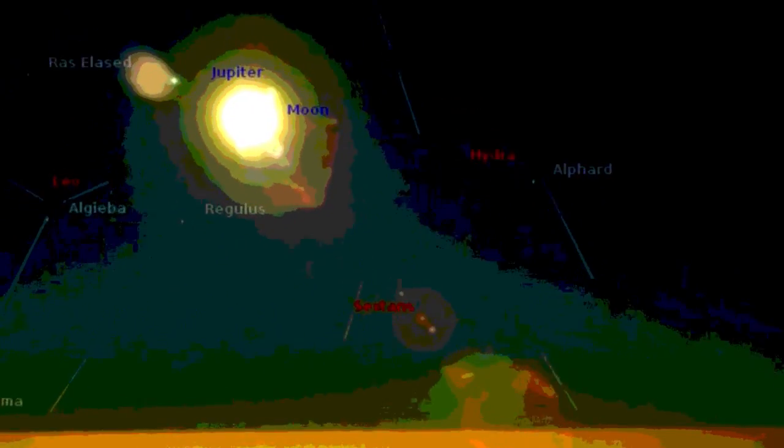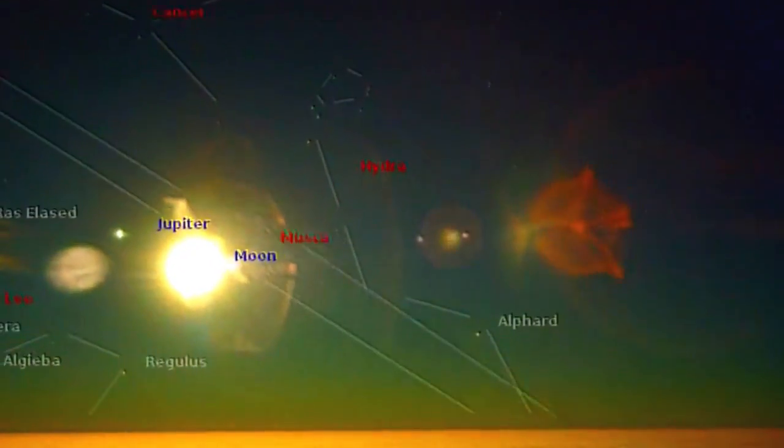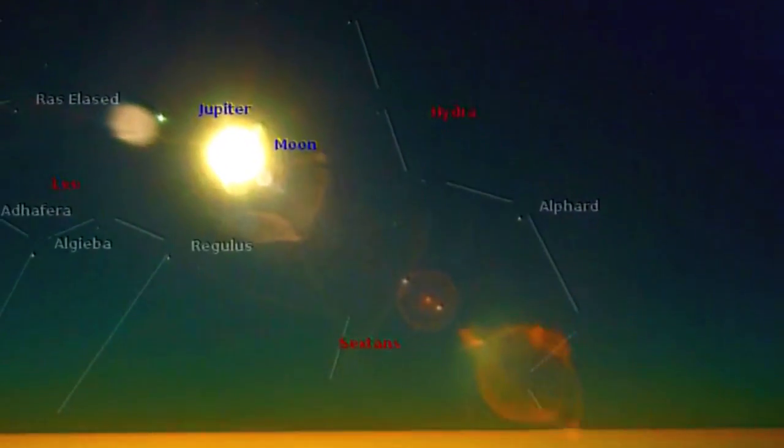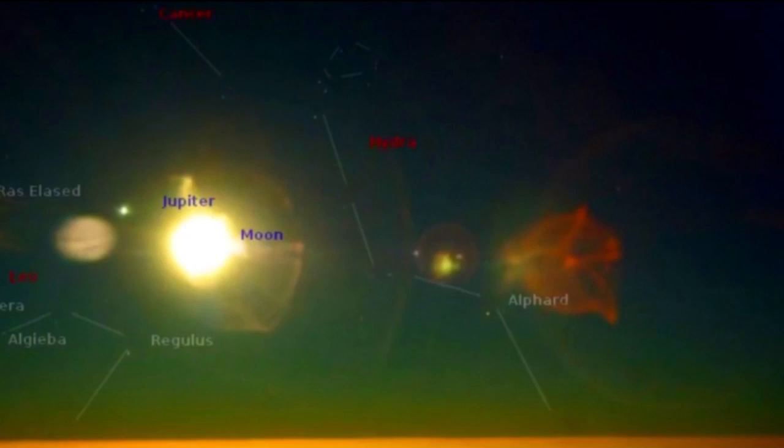But what we're looking at is Jupiter and the moon rising. Get your mojo rising. So are we seeing the reflection of Jupiter's moons? Look right here. One, two, three, four, five.